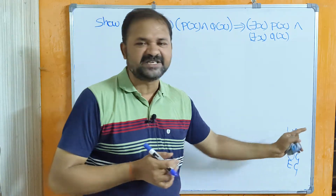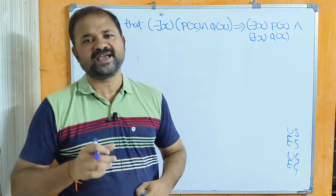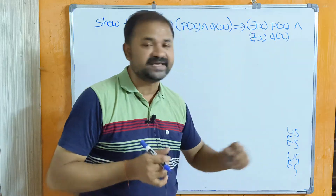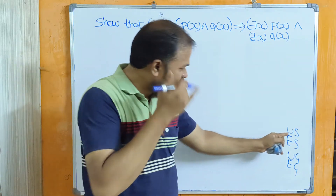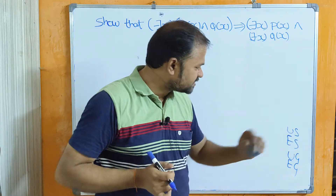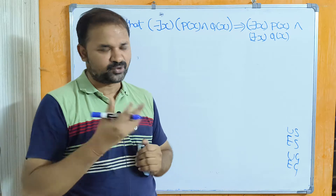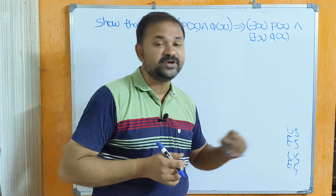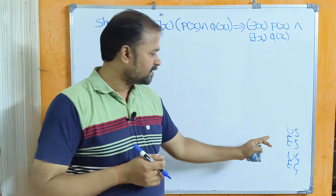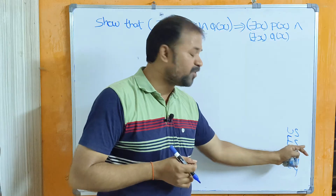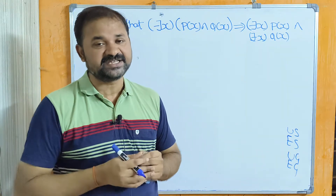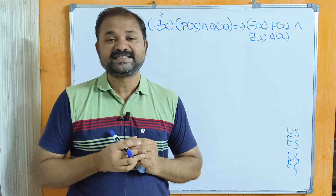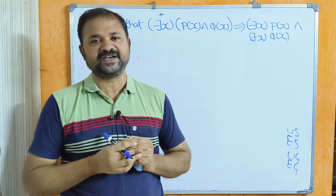In specification rules we have two rules: Rule US and Rule ES. With the help of Rule US, the universal specification rule, we can remove the universal quantifier. Likewise, with the help of Rule ES, existential specification, we can remove the existential quantifier.